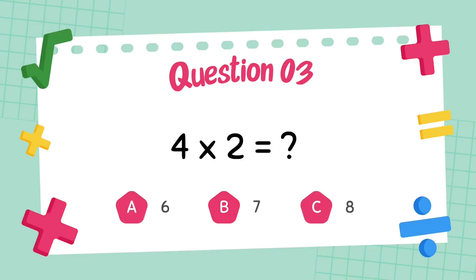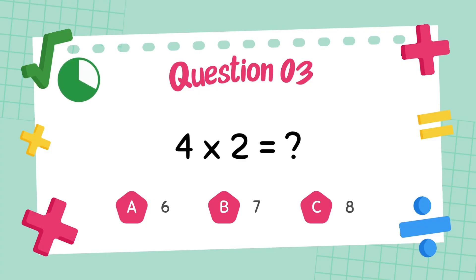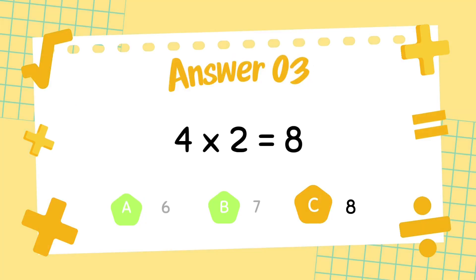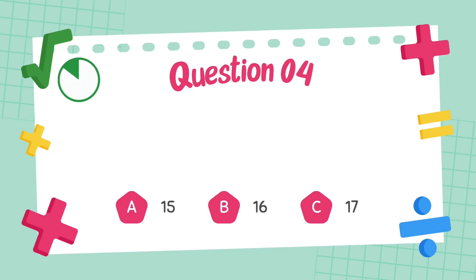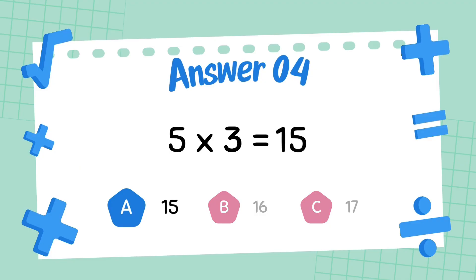What is 4 multiply 2? The answer is 8. What is 5 multiply 3? The answer is 15.